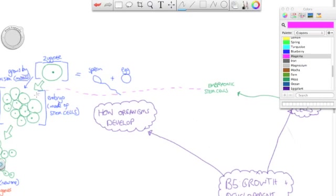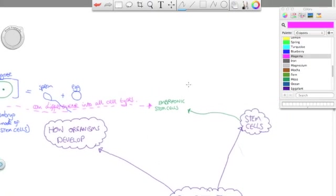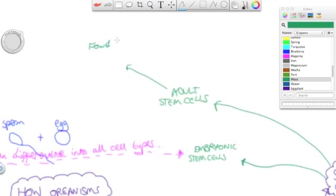Now embryonic stem cells are the stem cells found in embryos before a fetus is essentially grown into a baby. And these can grow into all types of cells. So they can grow into, as we said, heart cells, skin cells, and so on.